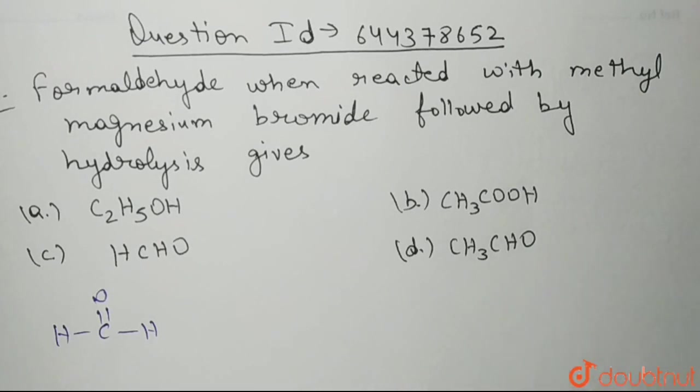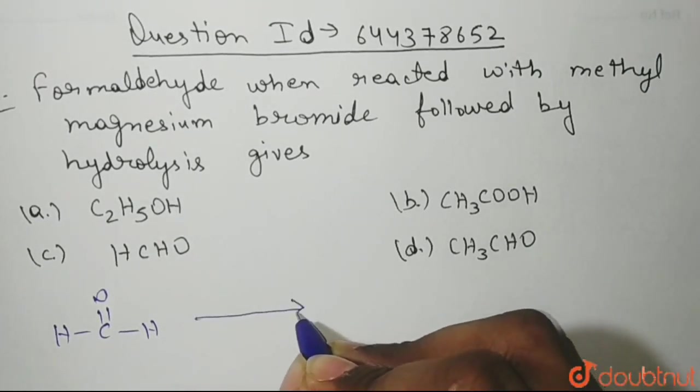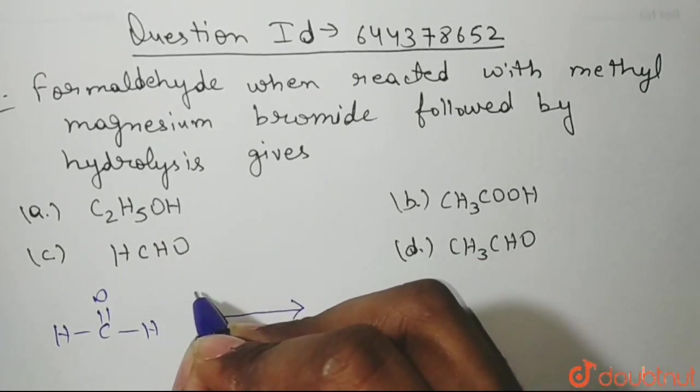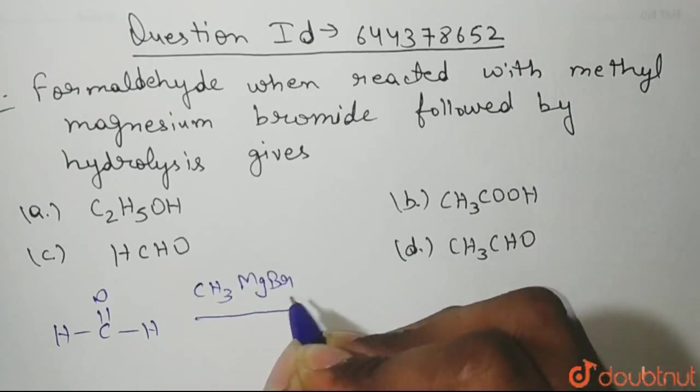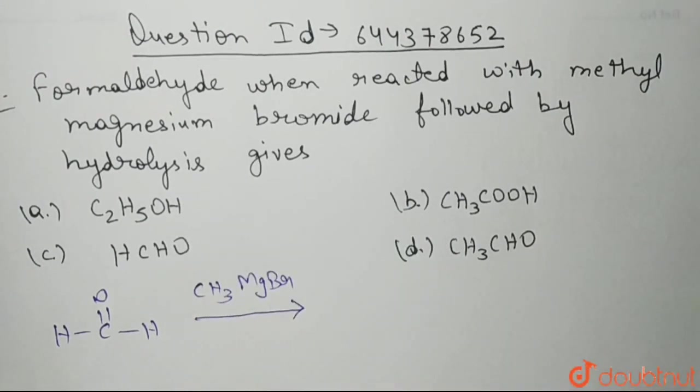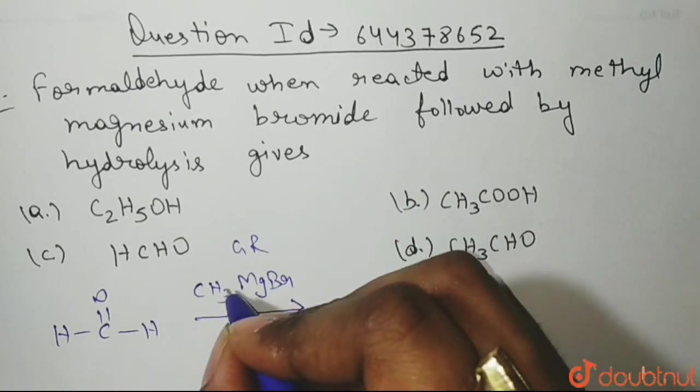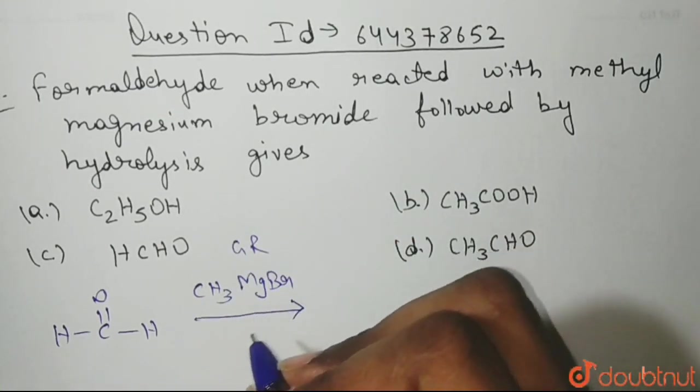Now, when we treat it with methyl magnesium bromide, what is the structure? It is like this: CH3MgBr. This is our methyl magnesium bromide and this is nothing but a Grignard reagent. This CH3MgBr is together.